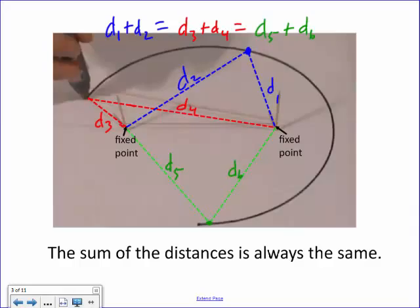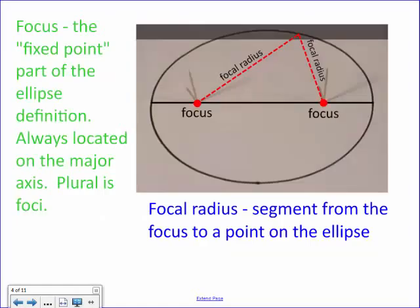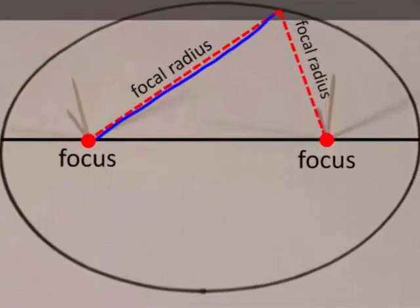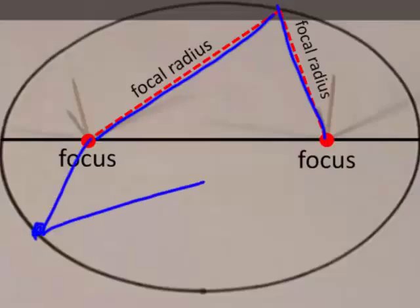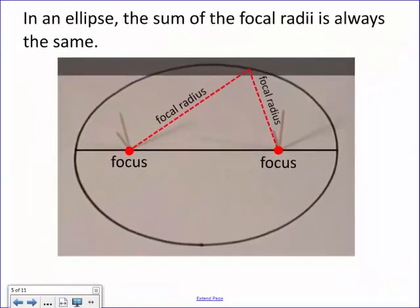Those fixed points are each called a focus — plural: foci. The segment from a focus to any point on the ellipse is called the focal radius. So the focal radius can be different sizes, but when you add the two focal radii together, that sum is always the same regardless of which point on the ellipse you choose.